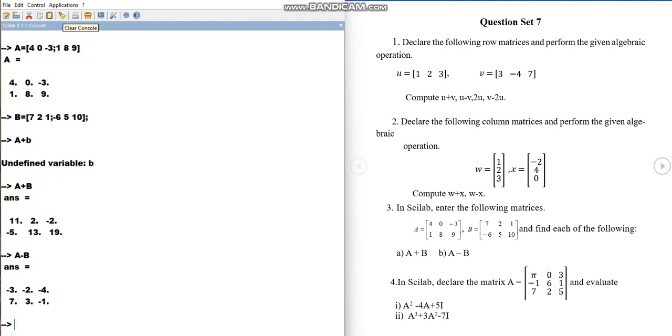Now in the fourth question, we are given a matrix of order 3 by 3. It's a square matrix, A is equal to, now for pi, what do we use? Yes, correct, we use percent pi, then 0, then 3.